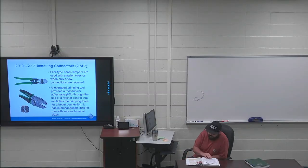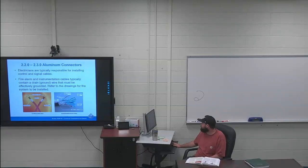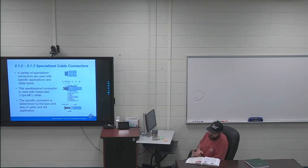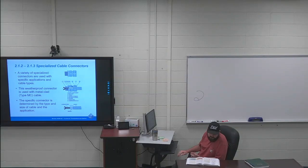Moving on to page 17, specialized cable connectors, 2.1.3. On the right hand side of the page, I highlighted the sentence. The sentence before the steps says type MC cable is explained here. So different steps for connecting MC cable. Step one is highlighted: select the correct connector size. This is normally done by comparing the physical dimensions of the cable to a cross reference table given in the manufacturer's product literature and/or installation instructions. You want to make sure step one is highlighted.